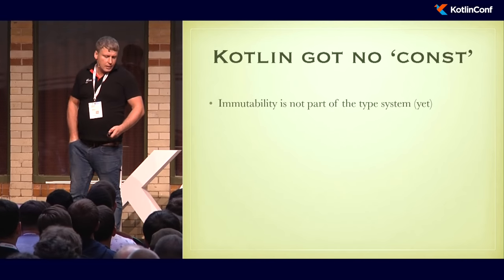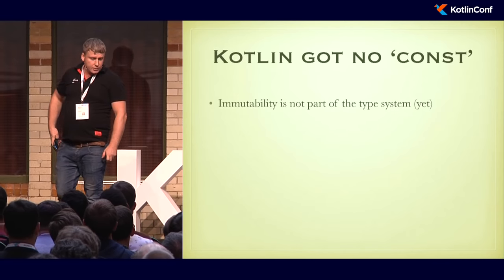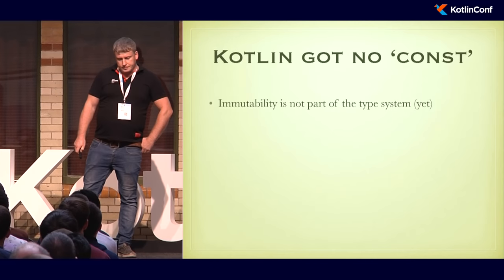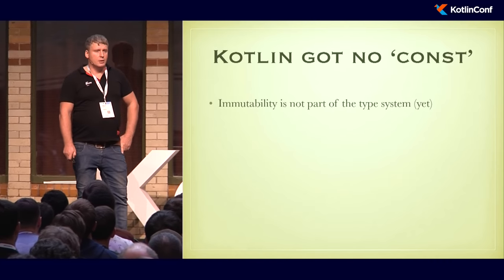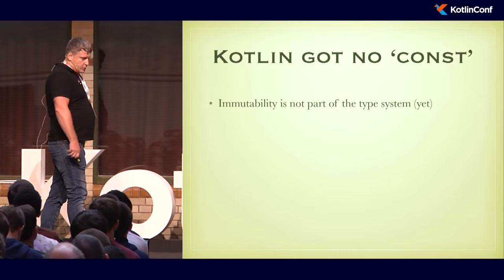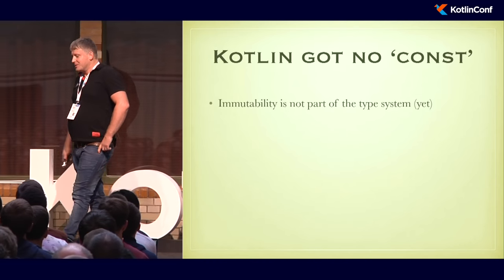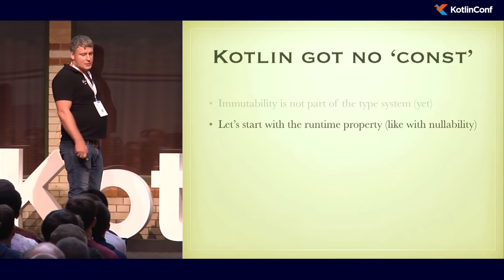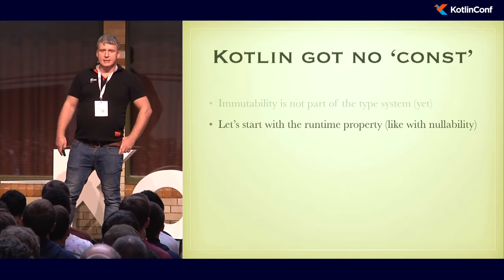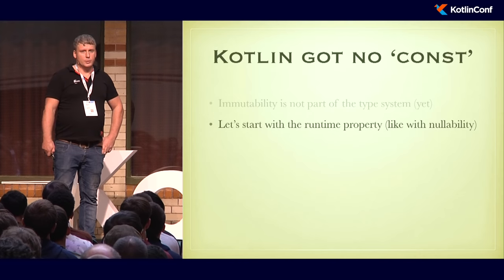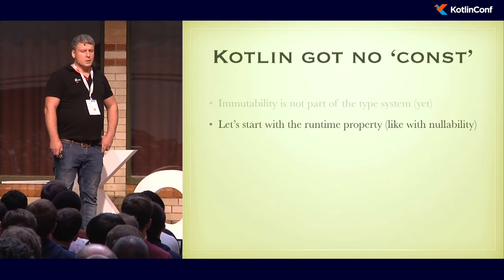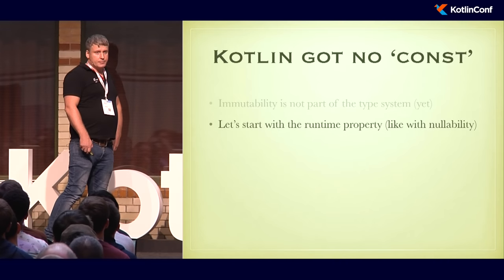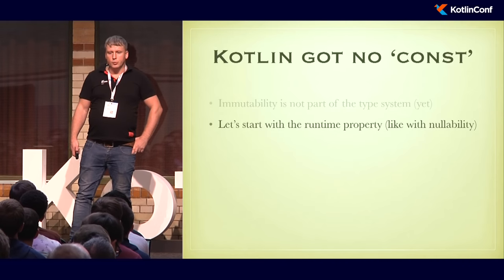An important runtime property we use in the Kotlin Native concurrency model is immutability. But immutability is not part of Kotlin's type system — there's no const keyword with the functionality available in C, for example. We wanted to start experimenting at the runtime level only, not affecting the language initially. So immutability is a runtime property, not a compile-time property. The same evolution happened with nullability: in Java, nullability is a pure runtime property, but Kotlin provides compiler help for nullability analysis.